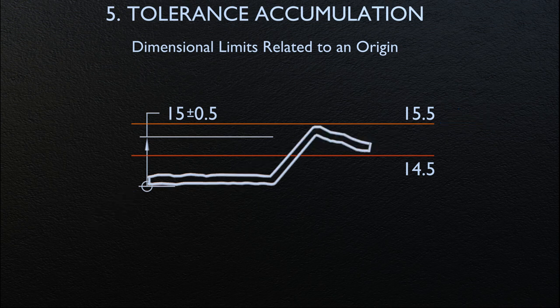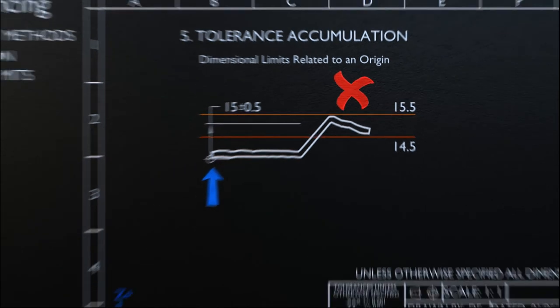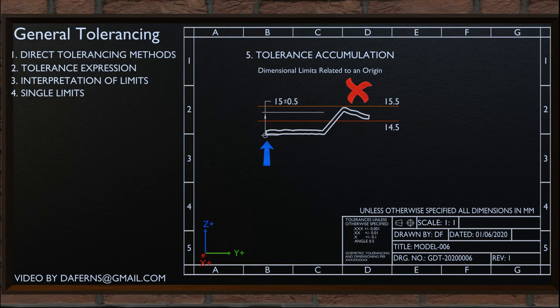Without such an indication, the longer surface could have been selected as the origin, thus permitting a greater angular variation between surfaces, as shown on the screen — which is not correct practice. With this, we come to an end of this video. More tolerancing methods are discussed in the following videos.